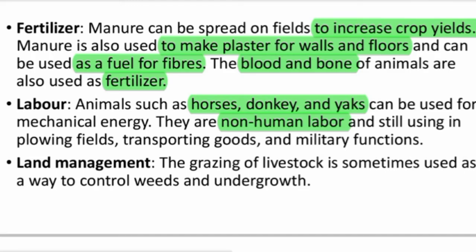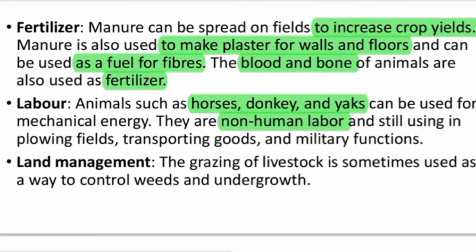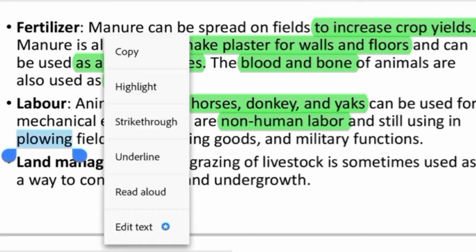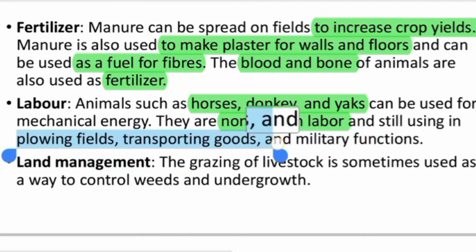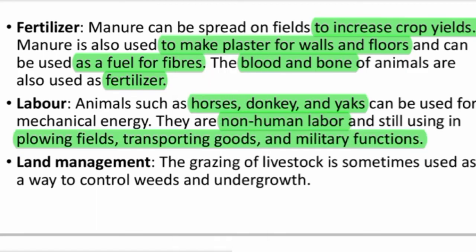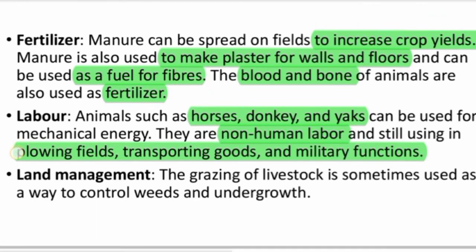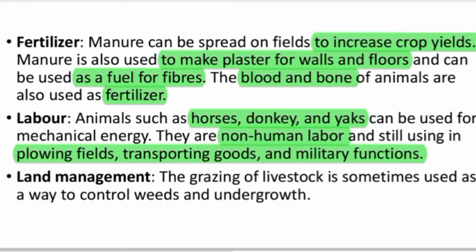As they are using it, they are using the plowing fee, transporting goods, and military functions. We have to make it as a small amount of money — we have to make it as much money as possible.